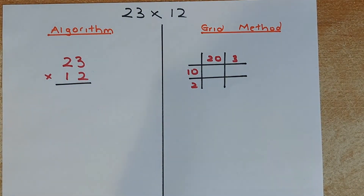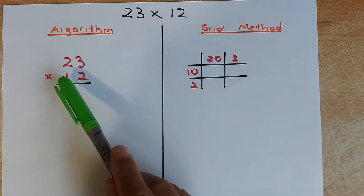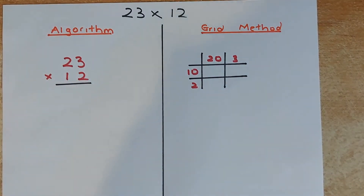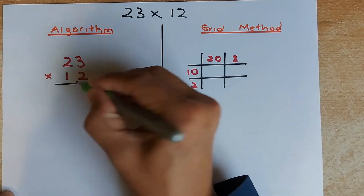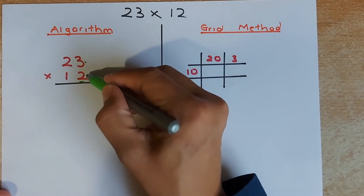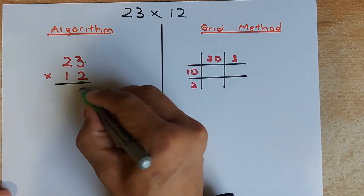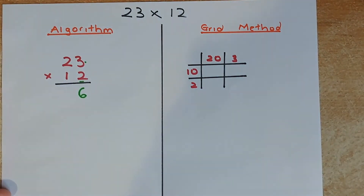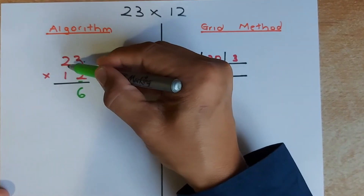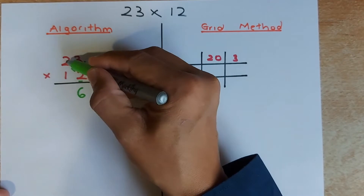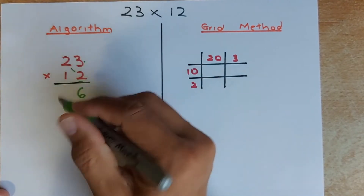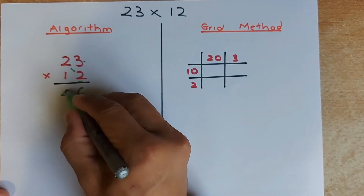In the algorithm method, you are going to put the numbers 23 times 12 as though you add them up in order. So the first thing you do, you are going to multiply by 2 first. So 3 multiplied by 2 will give you 6, so you are going to write 6 here. The next number you are going to multiply is 2. So 2 times 2 is going to be 4, so you are going to write 4 here.